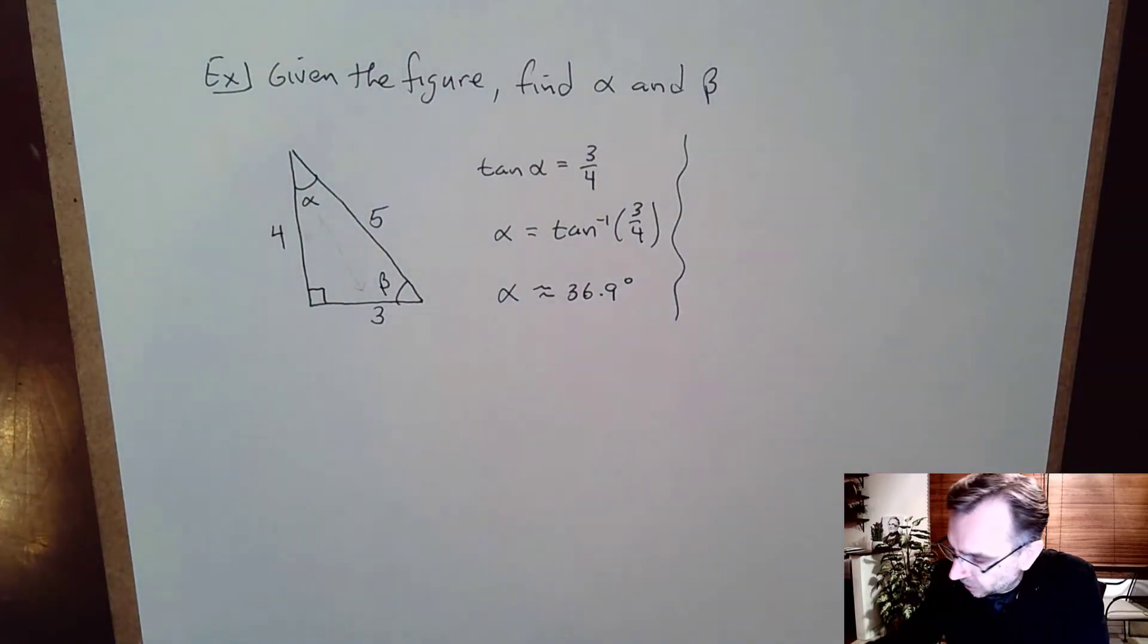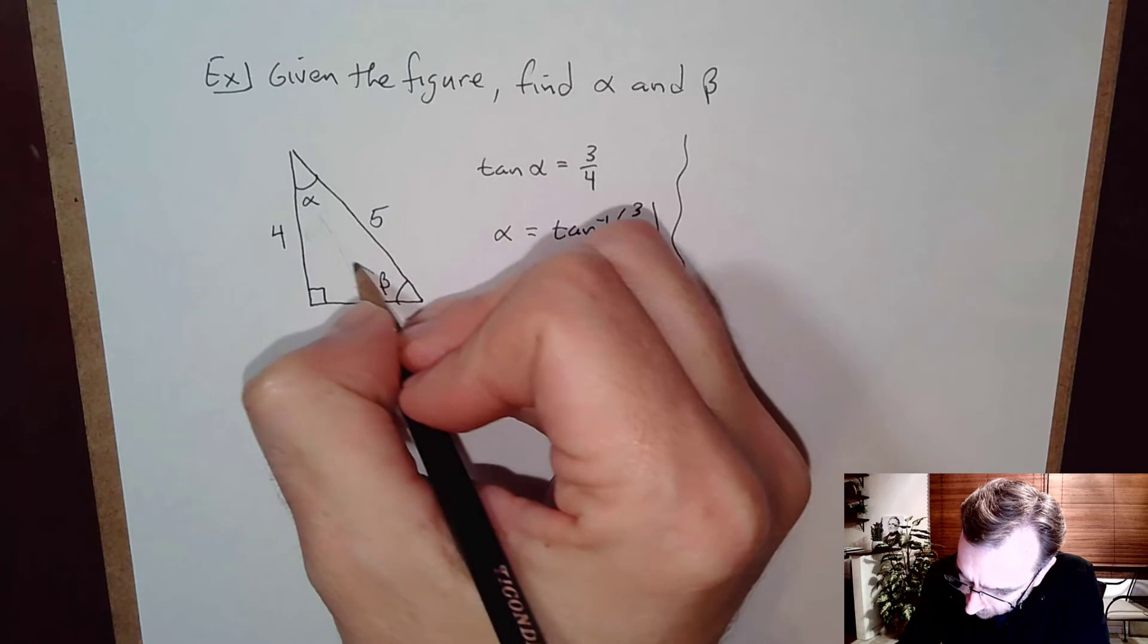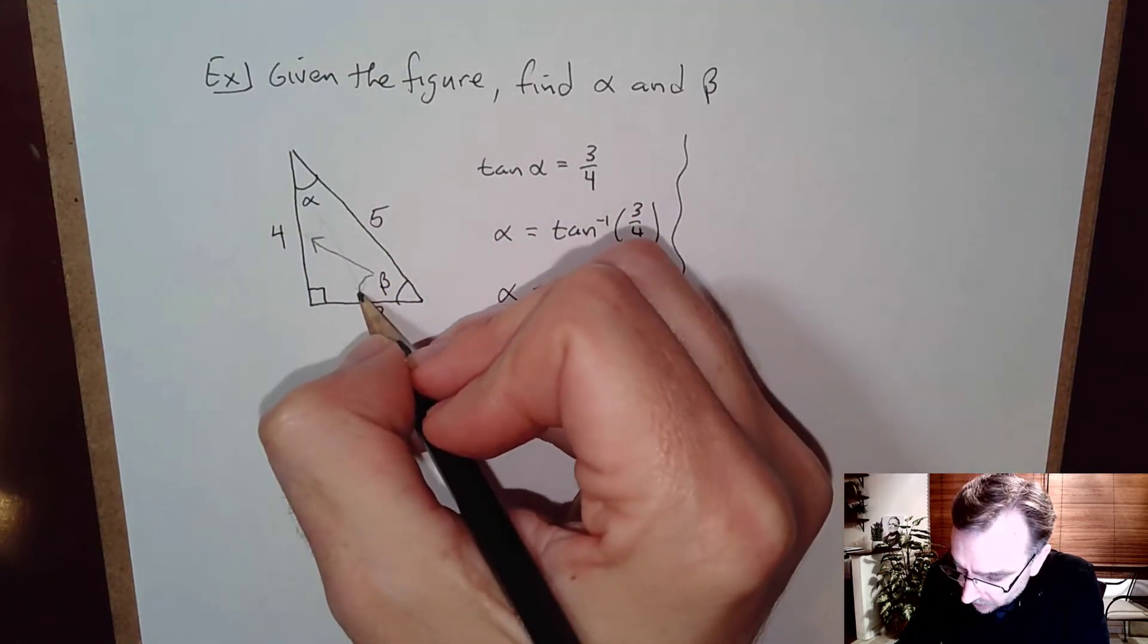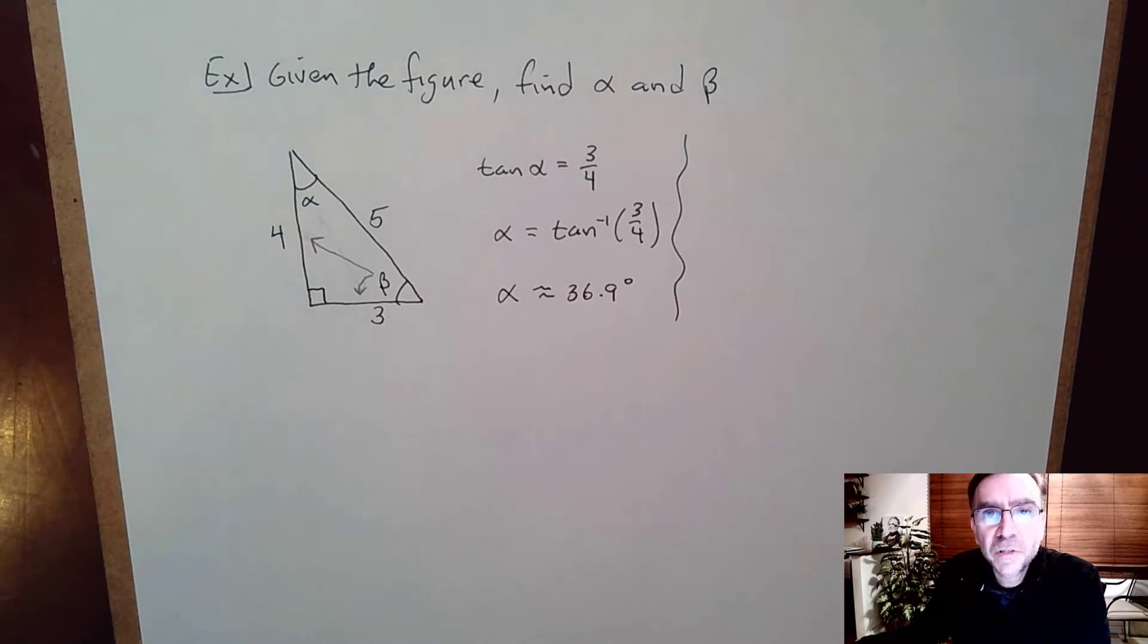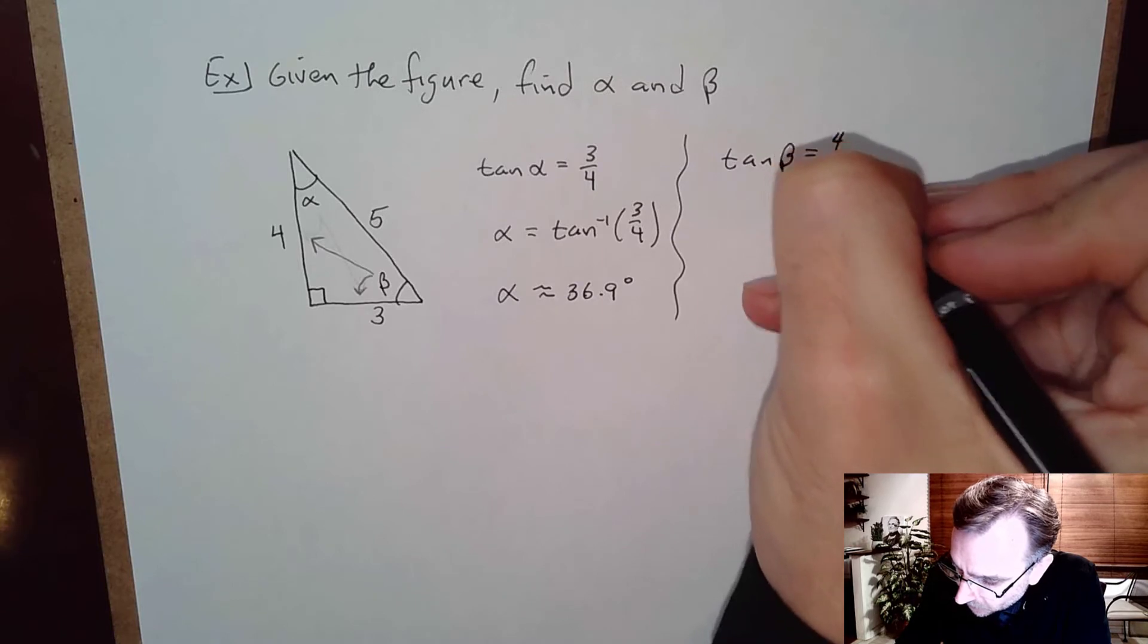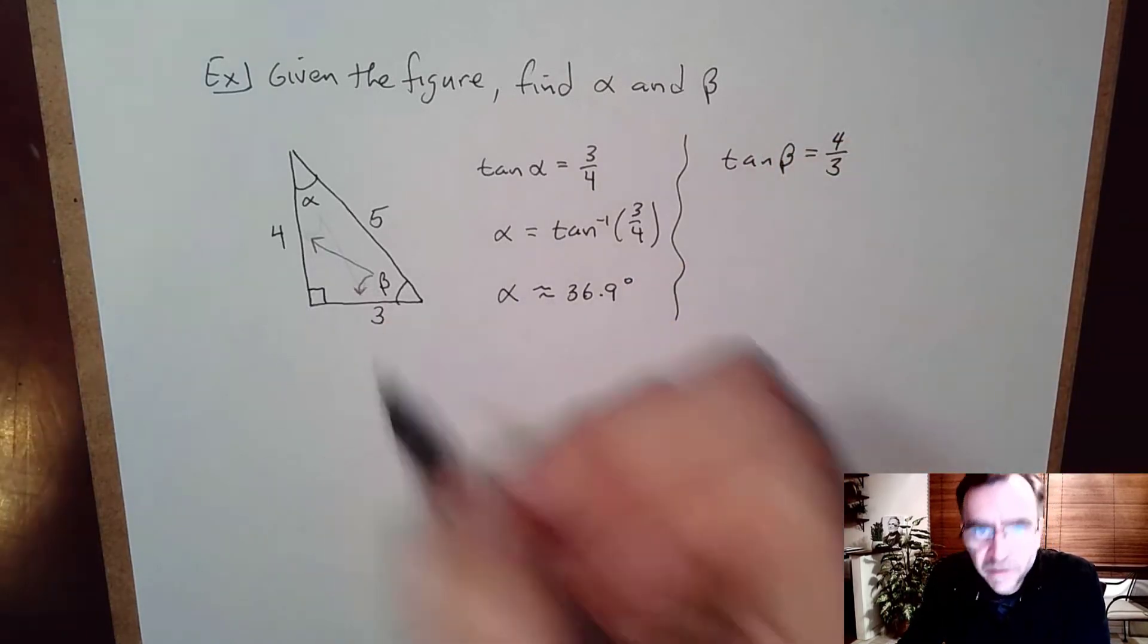So now I'm looking at angle B, right, and so the side opposite angle B is four units and the side adjacent is three units. So we'll use tangent again and we can write tangent of beta equals in this case four-thirds, right, opposite over adjacent.